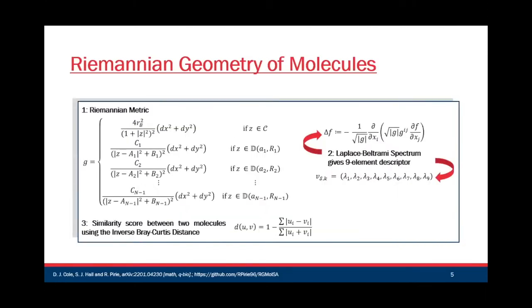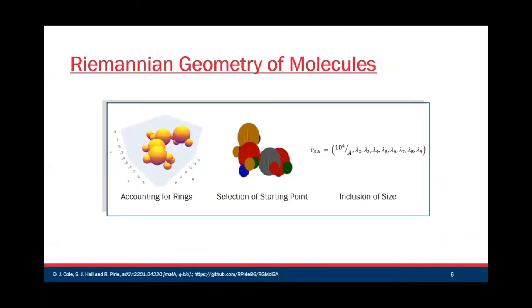I won't have time to go deeply into the maths, but the basis of our approach is that there's an object associated with the surface known as the Riemannian metric that captures in detail the geometry of the surface. By treating our molecule as a series of intersecting spheres of van der Waals radius, we can obtain the metric in its explicit form, which captures a lot more detail. These metrics can be used to compute the Laplace-Beltrami spectrum associated with the surface, giving a nine-element vector representation of eigenvalues describing the shape of the molecular surface. These descriptors are compared using the inverse Bray-Curtis distance, giving a score of zero for no similarity and one for identical molecules.